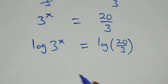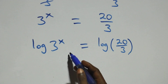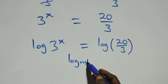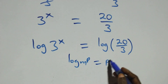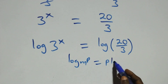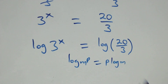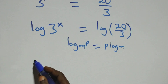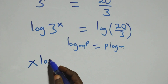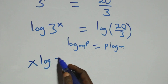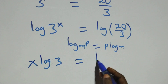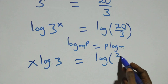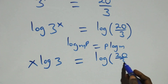Next step: we apply the power rule of logarithms, where log of m raised to power p is the same thing as p times log m. So what we have becomes x times log 3 equals log of 20 over 3.